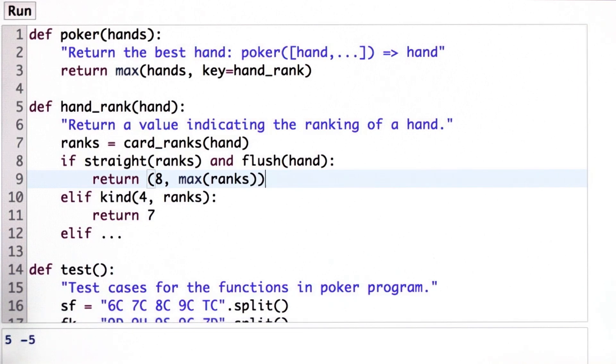And the idea there is if we had a hand, let's say it had ranks 2, 3, 4, 5, 6, then the only thing we care about is the 6. We can completely specify this hand because we know it's a straight. So if 6 was the high card, then that tells us everything we need to know about the straight.